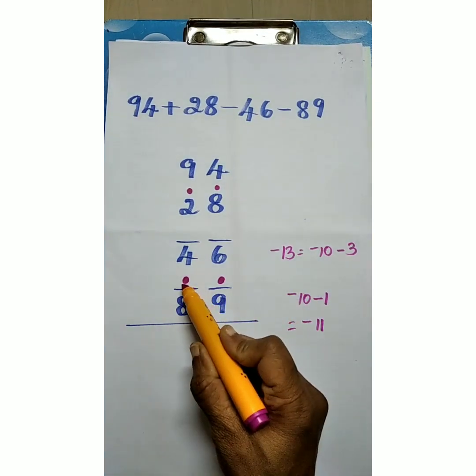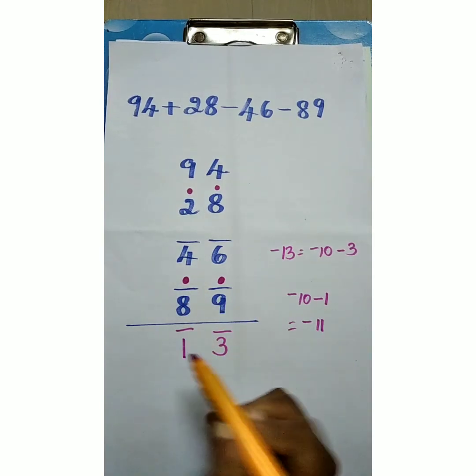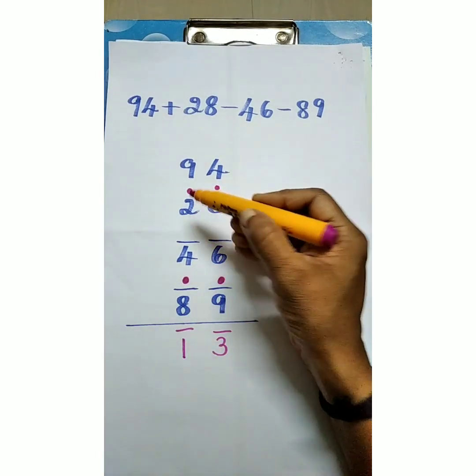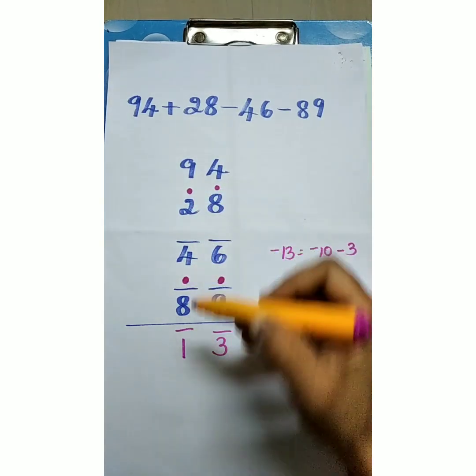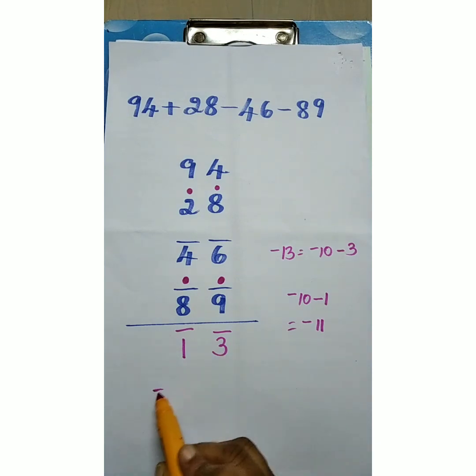So minus 10 is 1 shoot and minus 1. Here 1 positive shoot and here 1 negative shoot. So cancelled. Now the result. Both the digits are here minus. So the answer is minus 13.